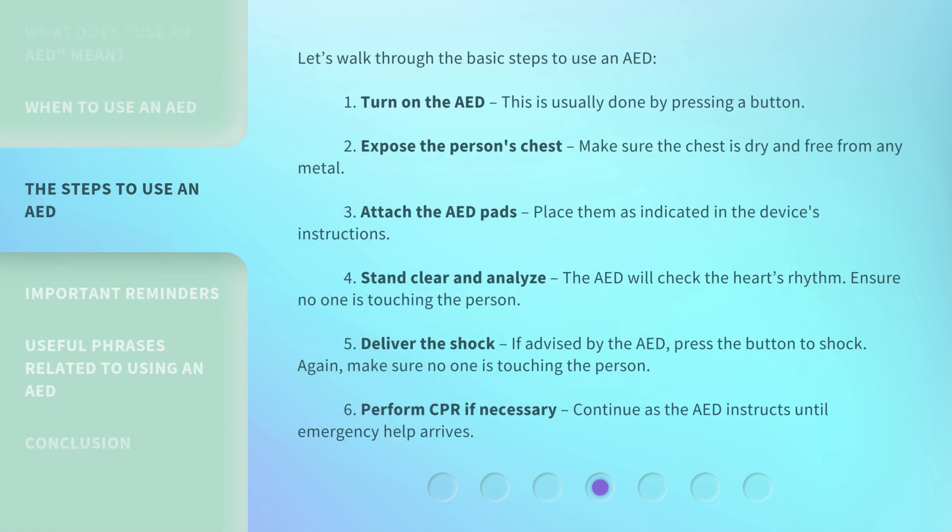Let's walk through the basic steps to use an AED. Step 1: Turn on the AED — this is usually done by pressing a button. Step 2: Expose the person's chest — make sure the chest is dry and free from any metal. Step 3: Attach the AED pads — place them as indicated in the device's instructions.